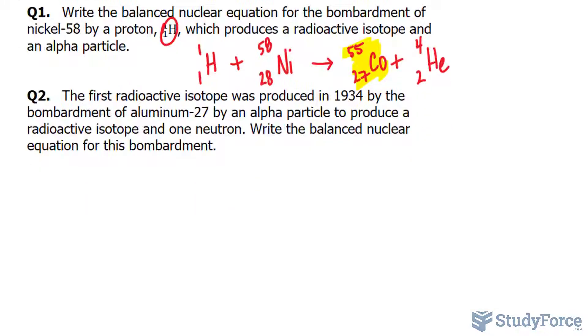Let's quickly move on to question two. The first radioactive isotope was produced in 1934 by the bombardment of aluminum-27 by an alpha particle to produce a radioactive isotope and one neutron. Write the balanced nuclear equation for this bombardment.